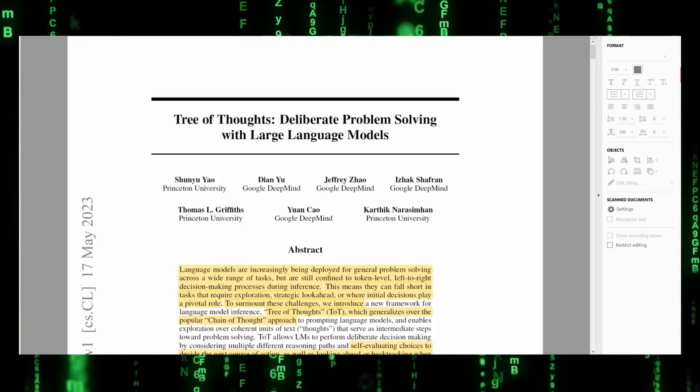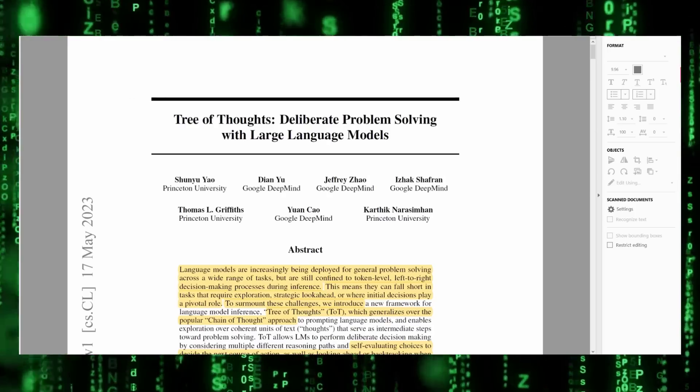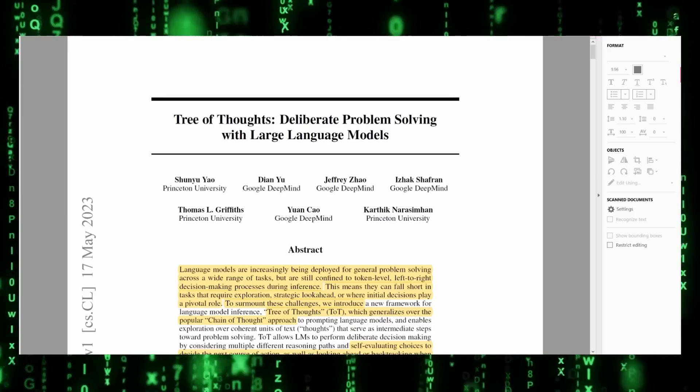A new scientific paper is released called Tree of Thoughts, Deliberate Problem Solving with Large Language Models. It's by researchers at Princeton University and Google DeepMind.